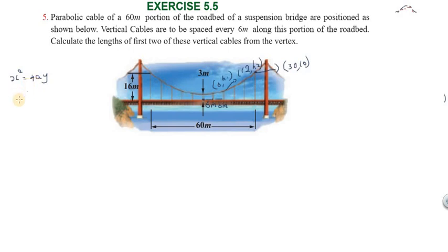First, we substitute the known point. 30 square equal to 4 into a into 16. So 900 equal to 4 into a into 16. Therefore, 900 divided by 4 into 16 gives us the value of a.